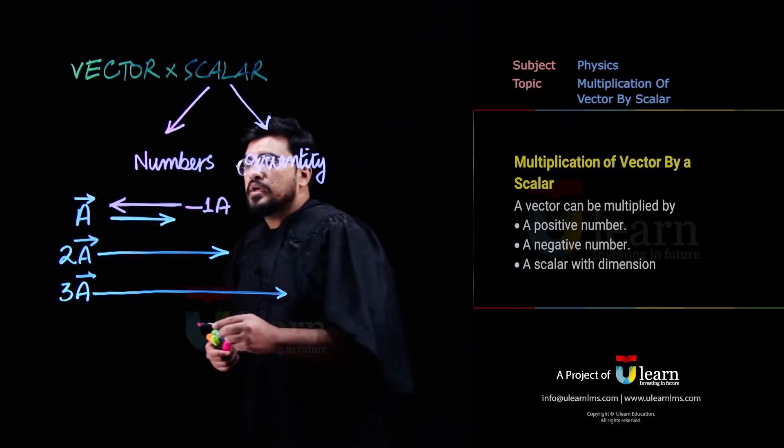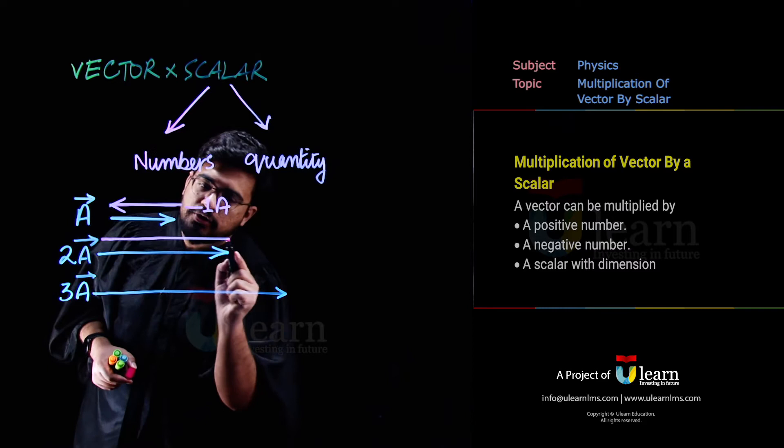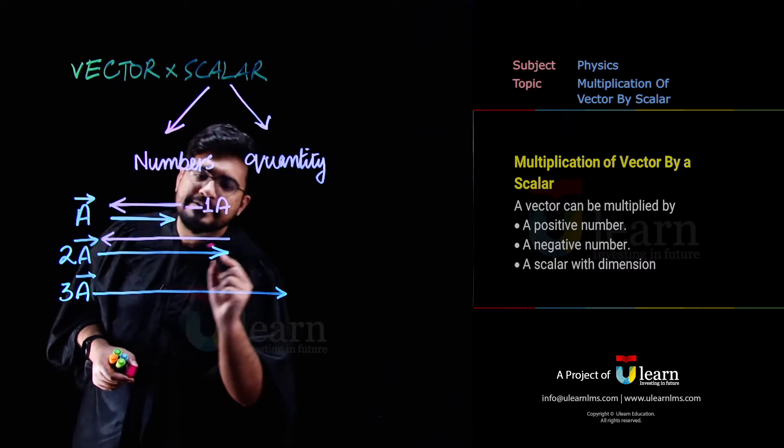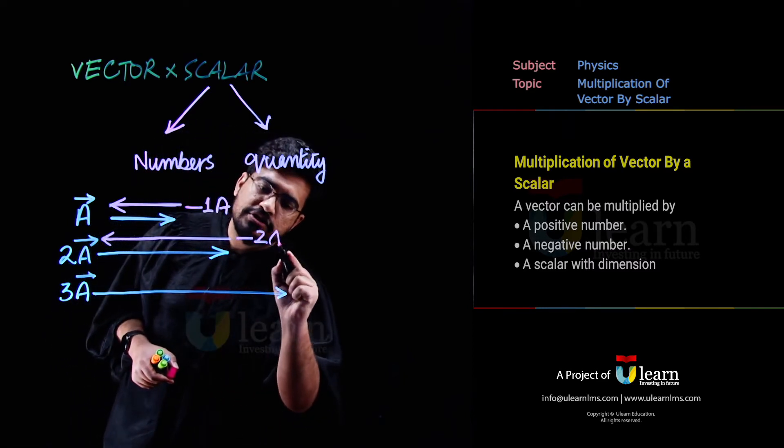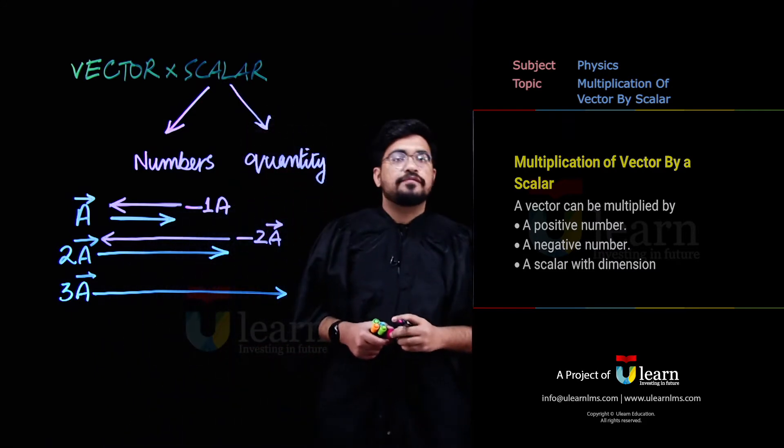What if, ab agar hum minus 2 se multiply karete hai, wo uski magnitude ko toh double karega hi karega, lekin sath-sath uski direction ko bhi reverse kar dega aur direction ka reverse hona is because of this negative sign.